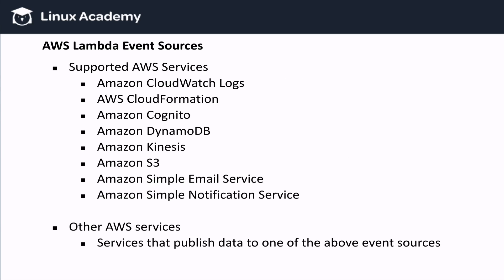Here's a complete list of supported AWS services: CloudWatch Logs, CloudFormation, Cognito, DynamoDB, Kinesis, S3, Simple Email Service, and Simple Notification Service. However, we can also use other AWS services as long as they publish data to one of the above event sources. For example, CloudTrail, which records API access events, is not directly supported. But when it stores records in S3, and S3 is a supported service, so that will still work.